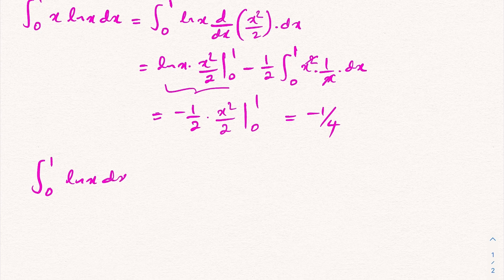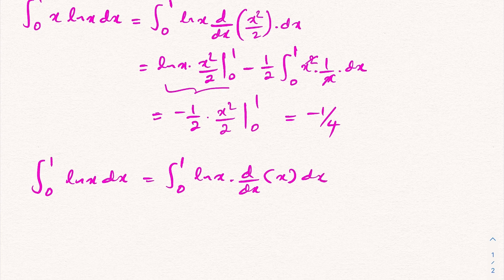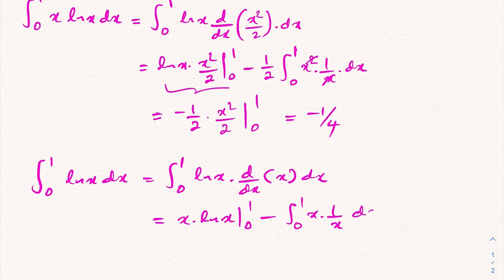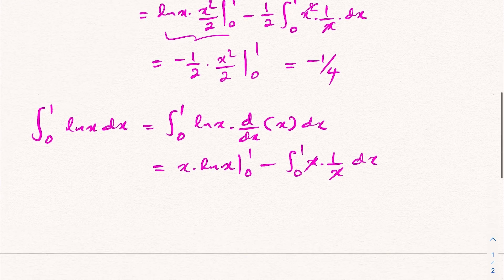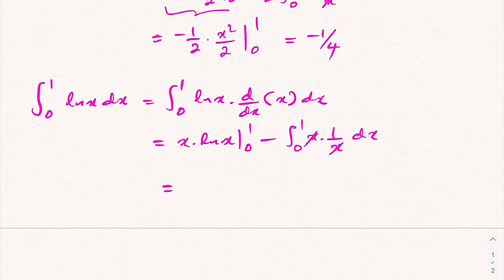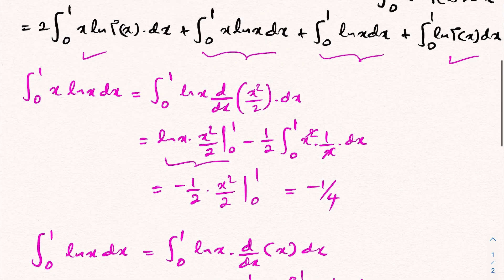For the integral from 0 to 1 of ln(x) dx, we again apply integration by parts, taking ln(x) as the first function and x as the second. We get x ln(x) from 0 to 1, minus the integral from 0 to 1 of x times (1/x) dx. Simplifying, the answer is minus 1.